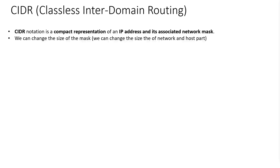Hello, this session is about CIDR notation. CIDR stands for Classless Interdomain Routing. CIDR notation is a compact representation of an IP address and its associated network mask. With CIDR notation, we can change the size of the mask. That means we can change the size of the network part and the host part. In the previous session on IPv4 classful addressing, the size of the mask was fixed. In CIDR notation, we can decide to have more or less bits for the network and the host part.